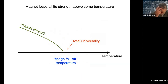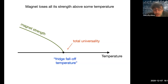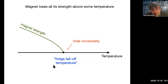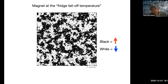Just to summarize: because of these random thermal kicks, the magnets gradually lose their strength, becoming weaker and weaker. Then at some temperature they lose all of their strength — the strength just disappears and the magnet is no longer a magnet. I call this temperature in this talk the 'fridge fall-off temperature.' This temperature is important for my story because it is at this fridge fall-off temperature that total universality is going to take place.